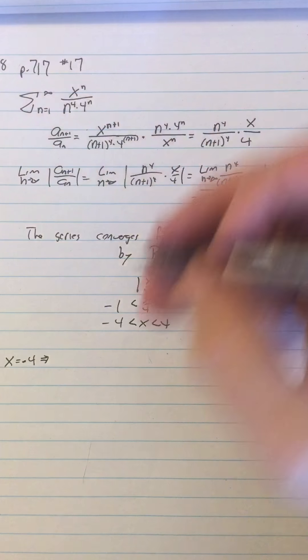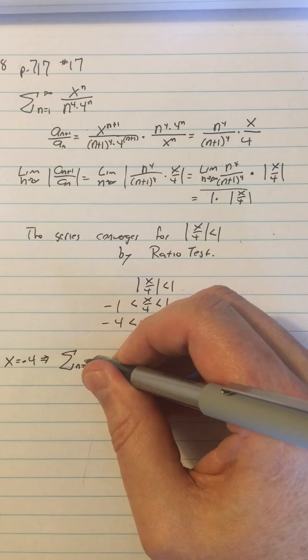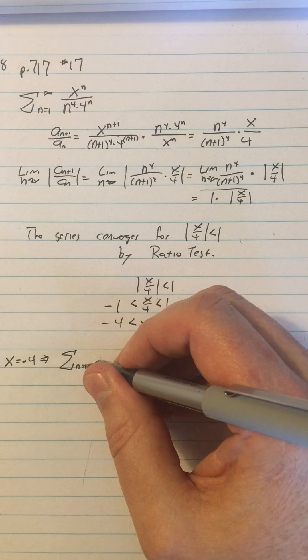Well, I'll just put negative 4 for the x up there. So I have the sum from n equals 1. If it wasn't n equals 1 or n equals 0, it just doesn't matter. I think it was n equals 0.